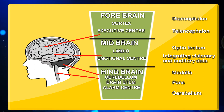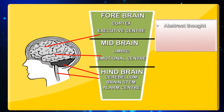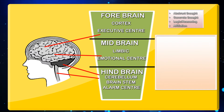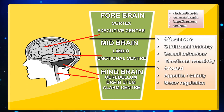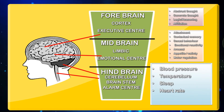The functions carried by these parts of the brain are vividly portrayed in the figure shown. The forebrain, called the executive center, looks into abstract thought, concrete thought, logic, reasoning, and affiliation. The midbrain, or emotional center, takes care of attachment, contextual memory, sexual behavior, emotional reactivity, arousal, appetite or satiety, and motor regulation. The hindbrain, or alarm center, takes care of blood pressure, temperature, sleep, heart rate, and breathing.